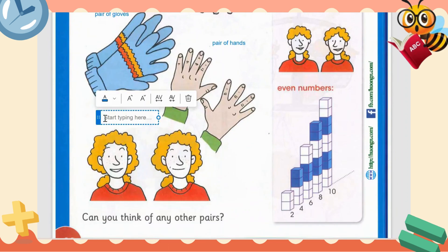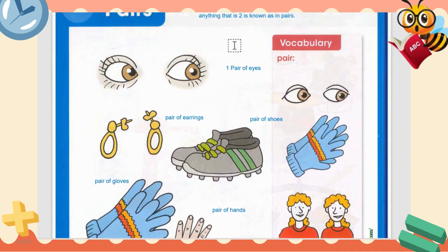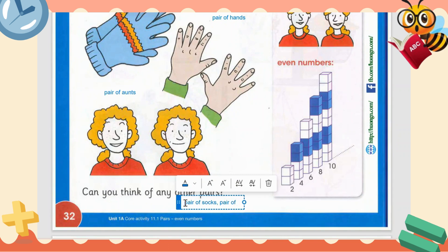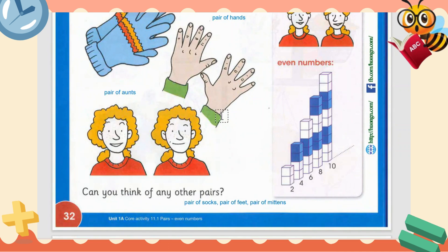Everything that is two is known as pairs. So here we have the examples: eyes, gloves, pair of ants. Can you think of any other pair? Pair of socks, pair of feet, pair of mittens. Anything that can exist in two is known as a pair.